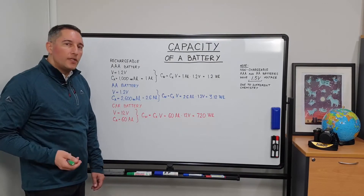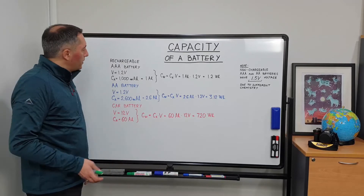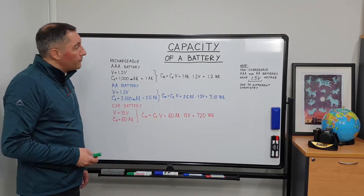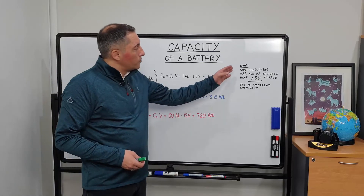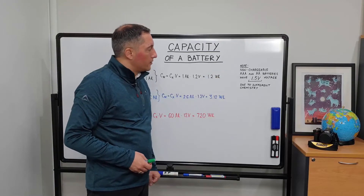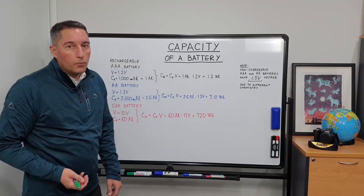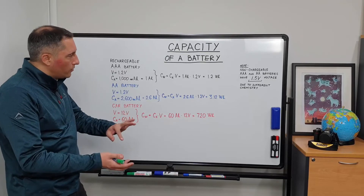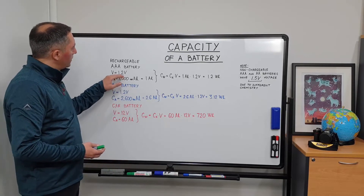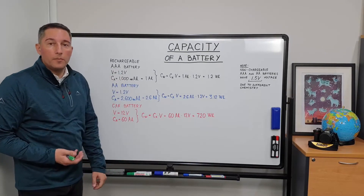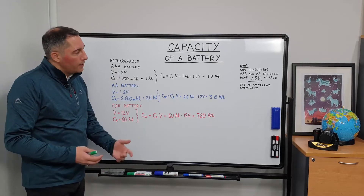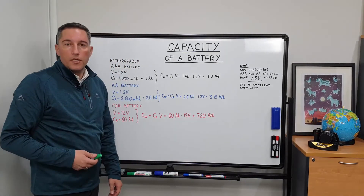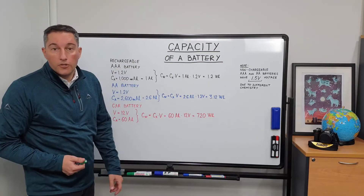Note that the common AA and AAA batteries seen in ordinary life are usually non-rechargeable and have a voltage of 1.5 volts. This differs from the rechargeable batteries due to the different chemistry of those non-rechargeable cells.